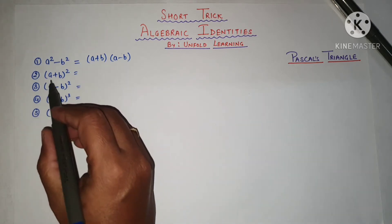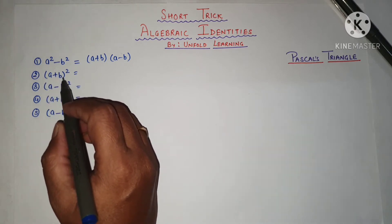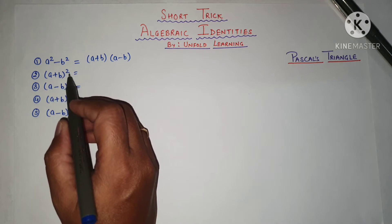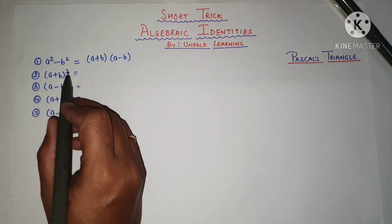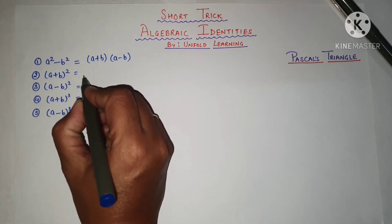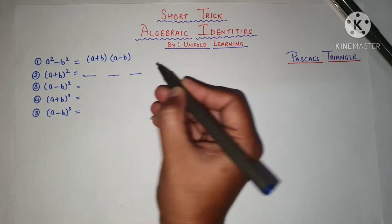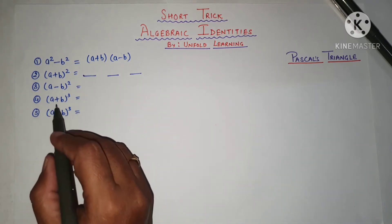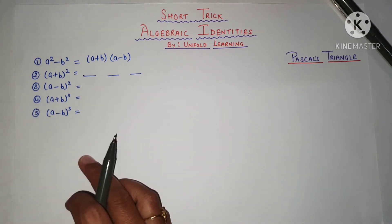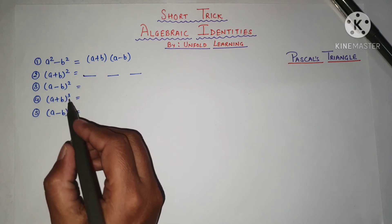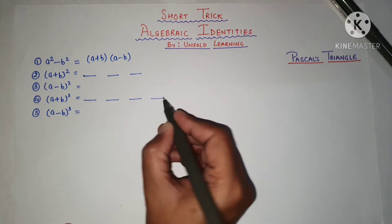Like I have (a + b) whole square to write. First of all, the degree gives us degree plus 1 as the number of terms. So in (a + b) whole square, we have 2 plus 1, that is 3 terms. For (a + b) whole cube, the degree is 3, so we have 1, 2, 3, 4 terms.